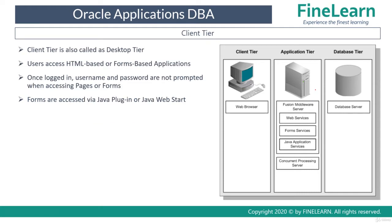In this lesson we will be focusing on the client tier. As you can see here, the client tier is also basically called as a desktop tier. This is nothing but the end user systems which are used to access Oracle E-Business Suite. The client tier basically needs a simple web browser and a JRE software to access the application. Once users log in, they can access two types of applications: either an HTML-based application or a forms-based application.